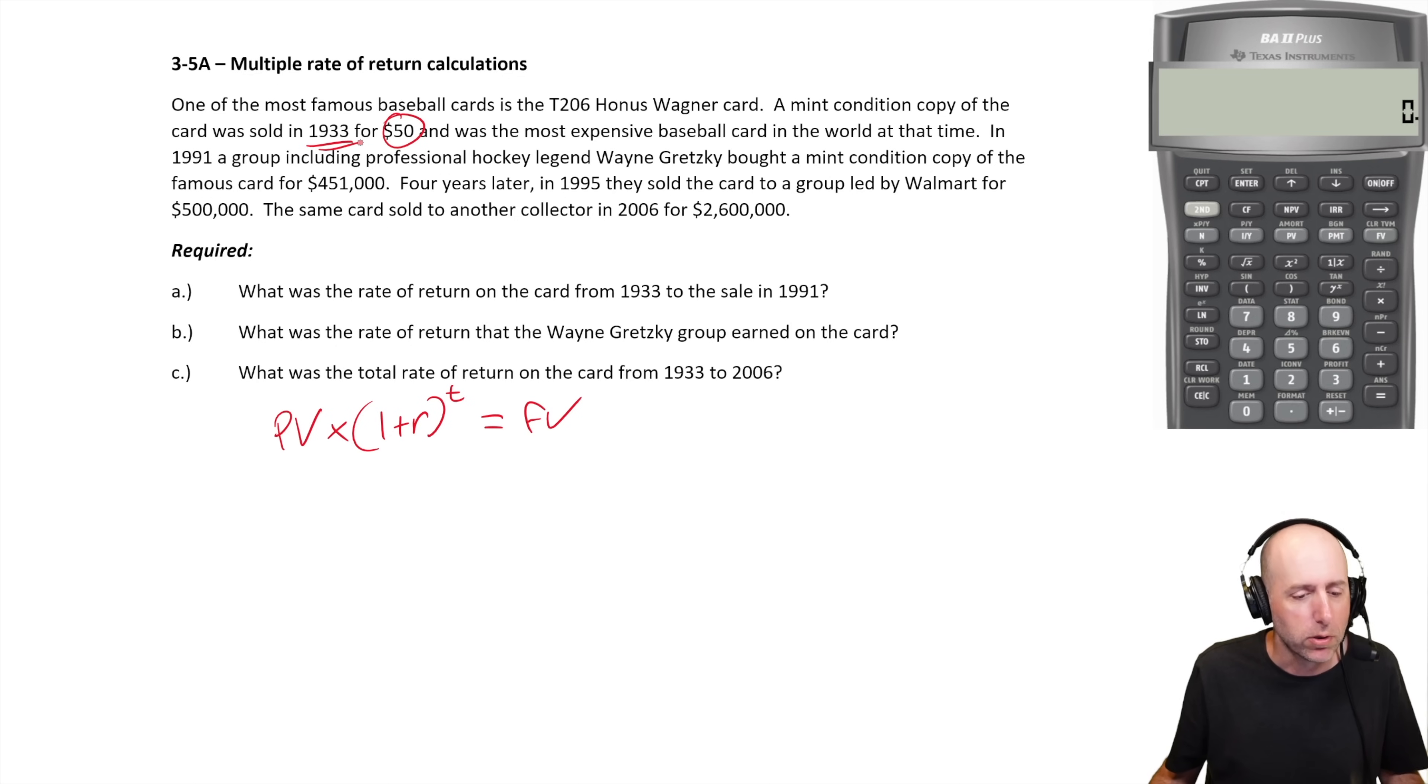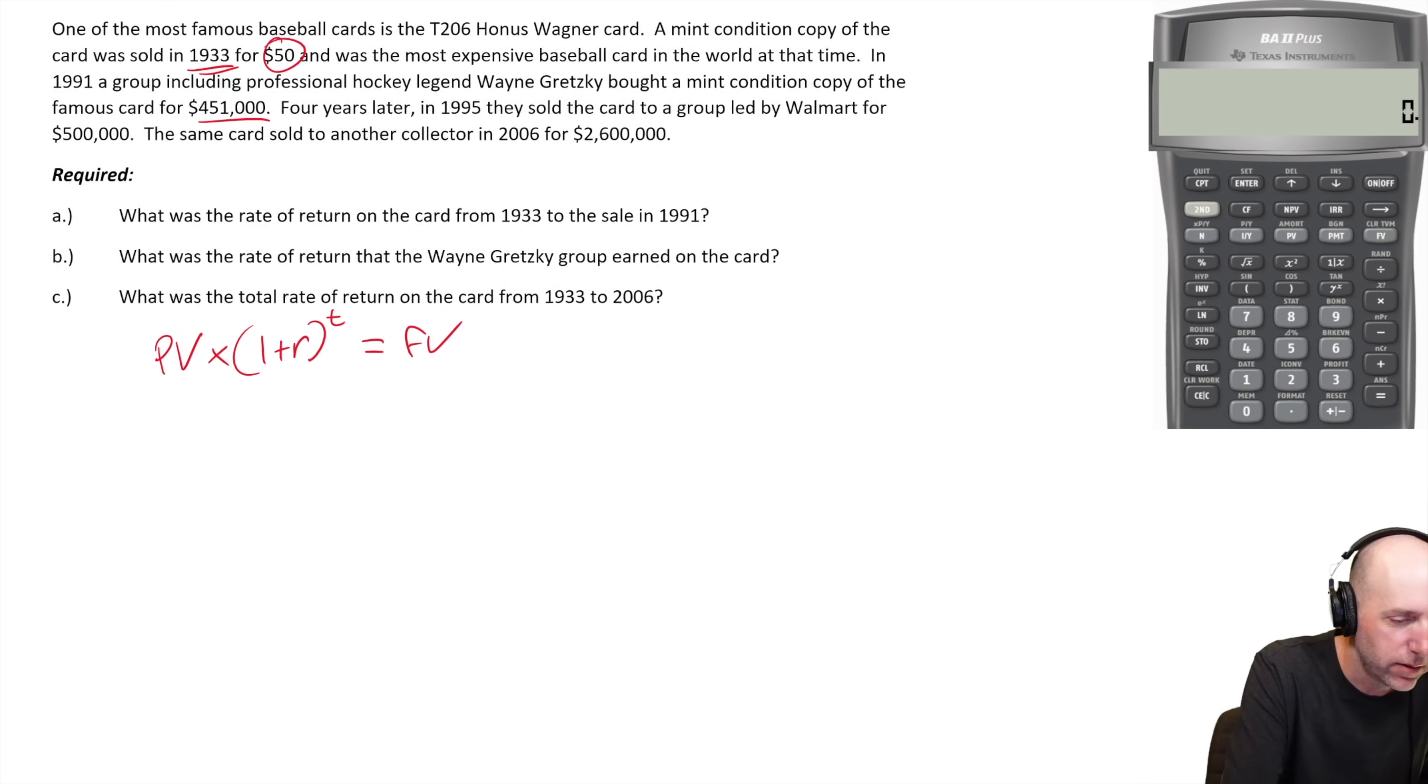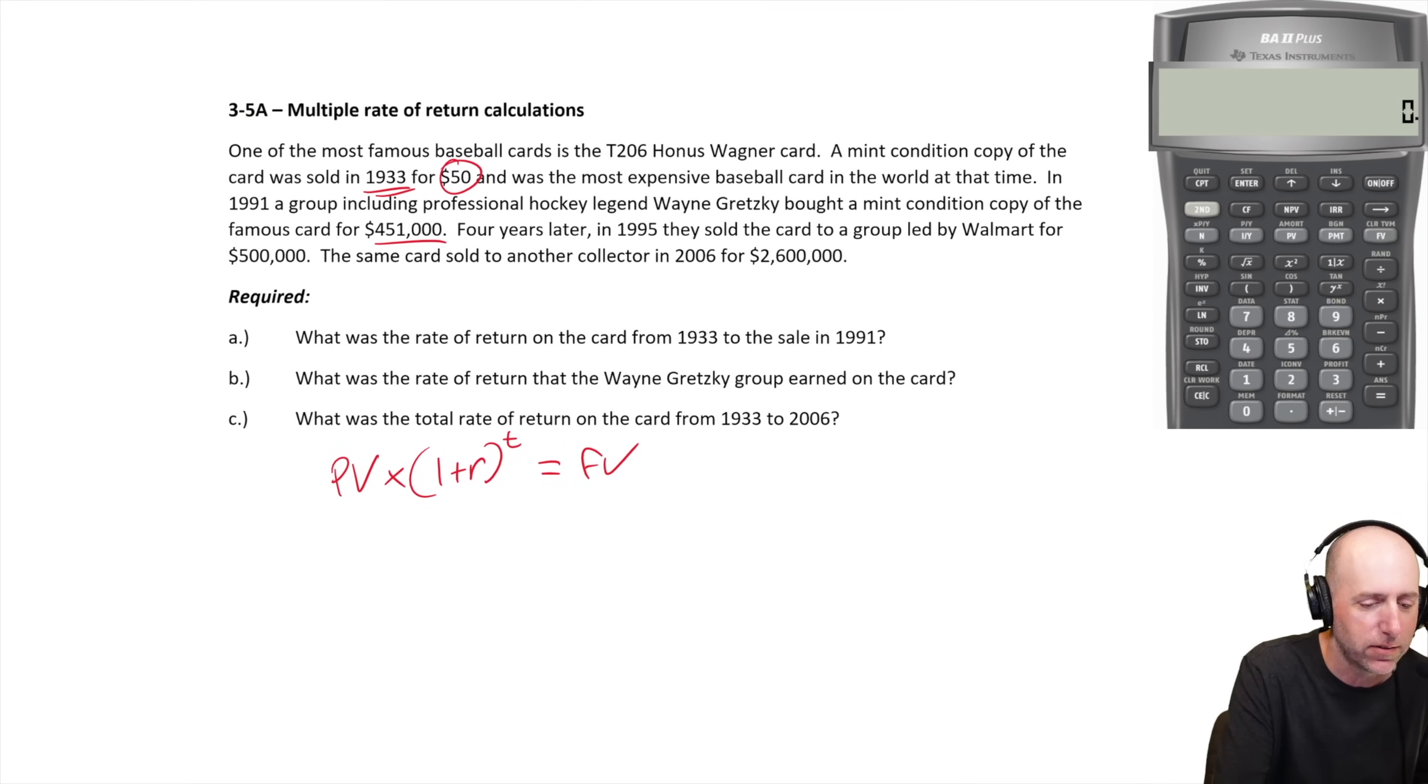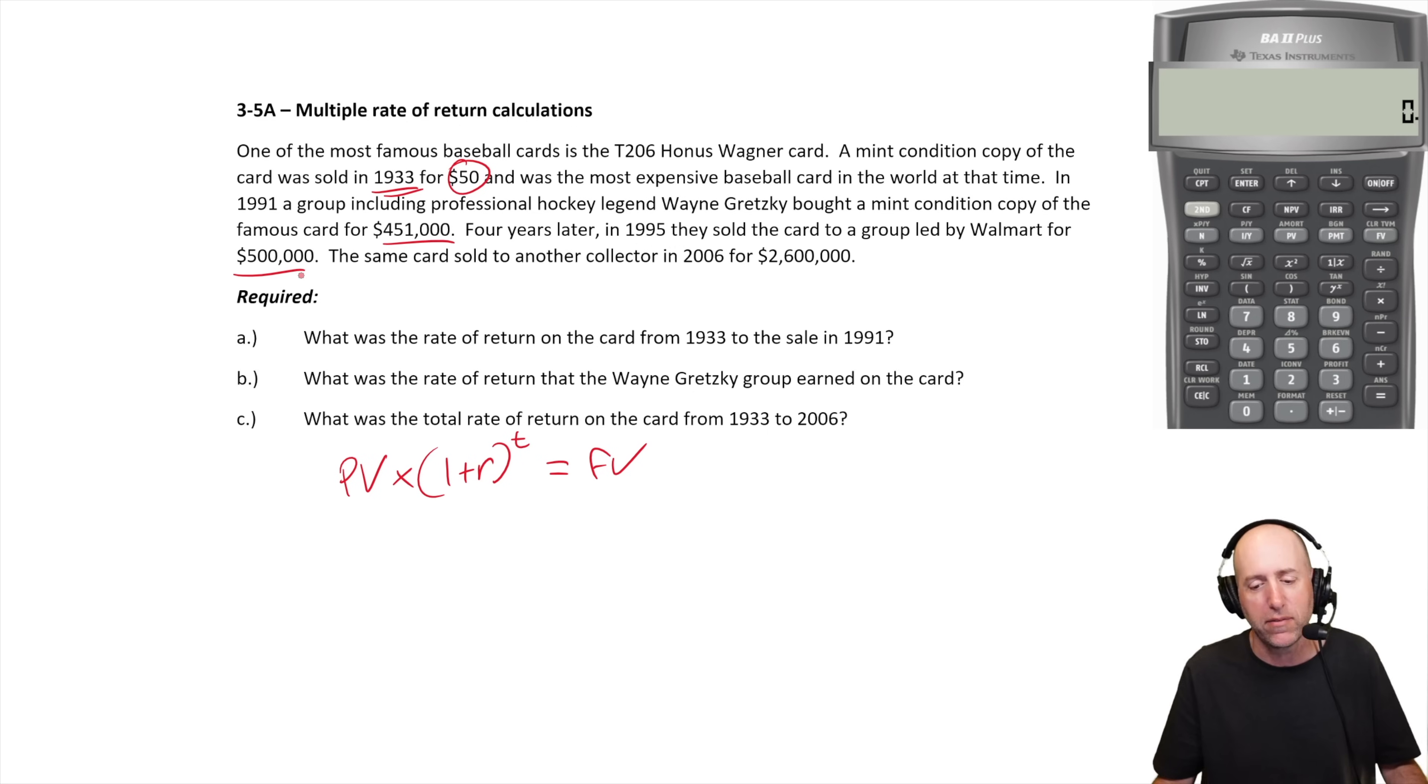In 1991 a group including professional hockey legend Wayne Gretzky bought a mint condition copy of the famous card for $451,000. Four years later in 1995, they sold the card to a group led by Walmart for $500,000. These are famous sports cards bought and sold by famous people. The same card sold to another collector in 2006 for $2.6 million.